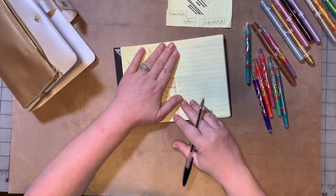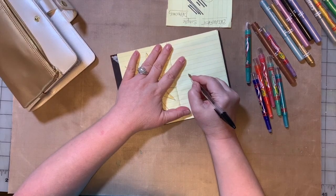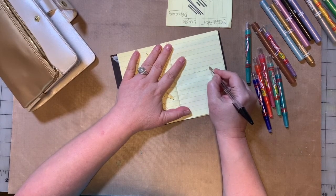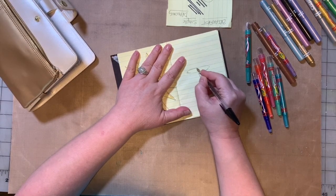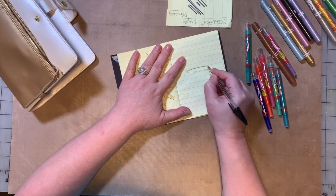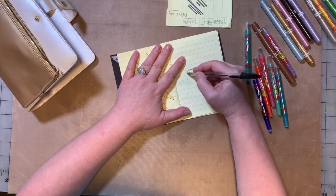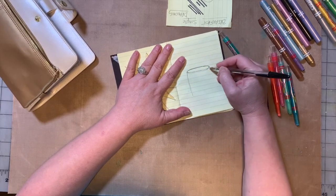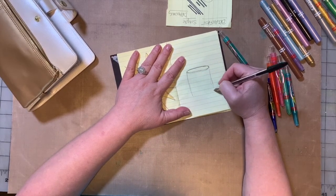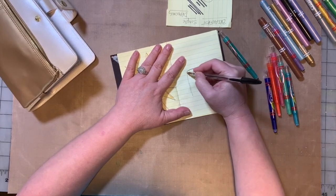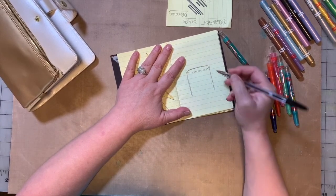And let's do a cup. Cups are pretty easy, so draw an oval shape, sort of a flattened circle. Then draw two lines straight down.